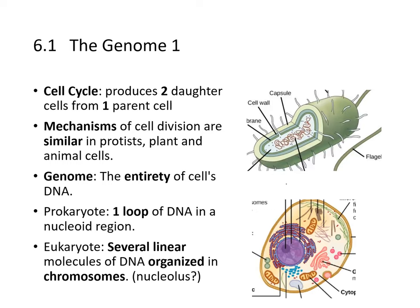The cell cycle produces two daughter cells from one parent cell. The mechanisms for cell division are similar in protists, plants, and animal cells — they all have to divide the cell contents as well as the genome. The genome is the entirety of a cell's DNA. For prokaryotes, they all contain one loop of DNA in a nucleoid region.